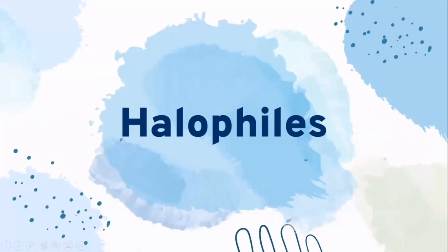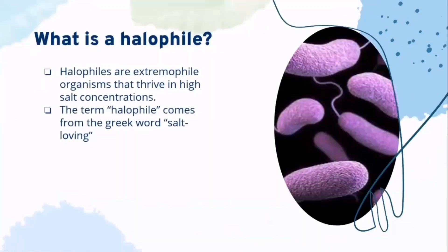We come now to halophiles. What is a halophile? Halophiles are extremophile organisms that thrive in high salt concentrations. The term halophile comes from the Greek word meaning salt-loving.